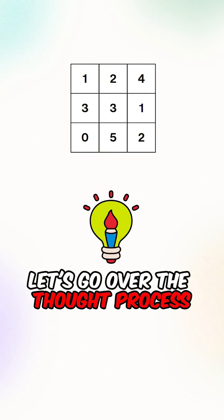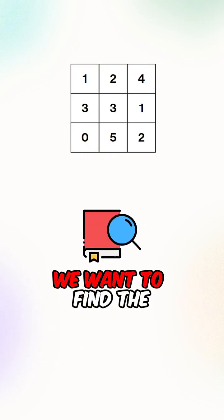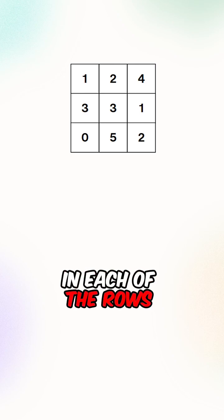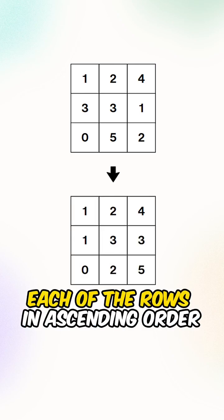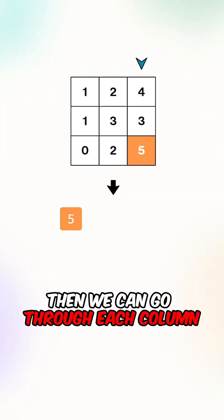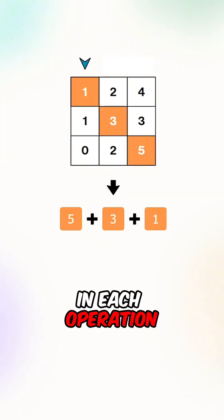Let's go over the process. In each of the operations, we want to find the largest elements in each of the rows. What we can do is sort the elements in each of the rows in ascending order, then we can go through each column to retrieve the largest value in each operation.